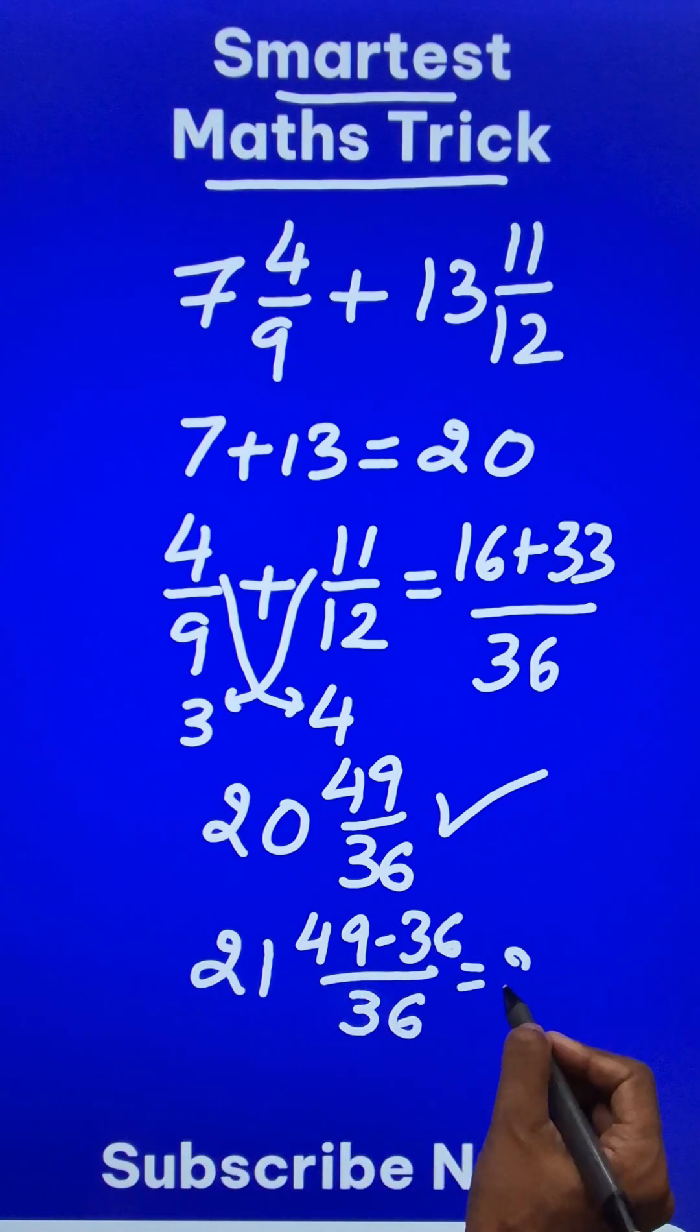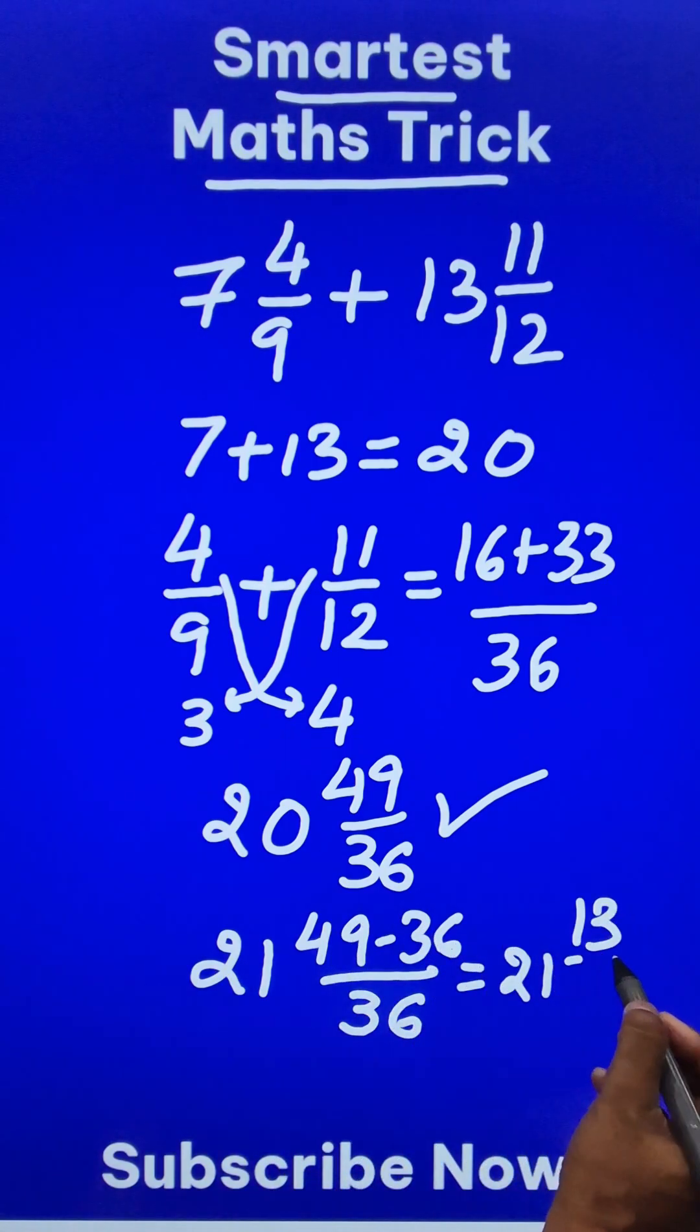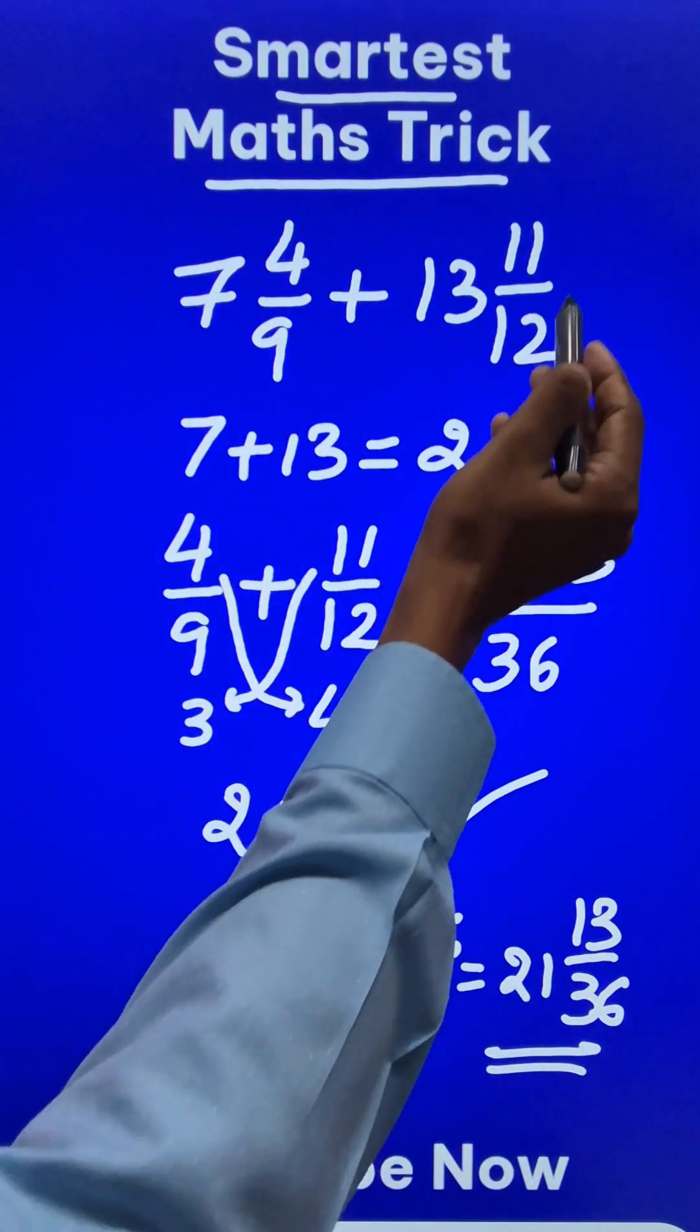So what is the answer to this question? 21, the whole number part and 49 minus 36 is 13/36. Now you can check using the traditional approach.